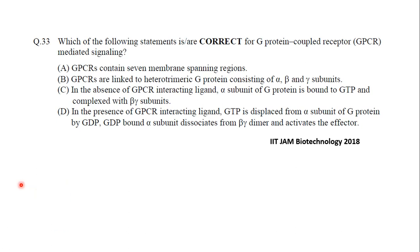GPCRs contain seven transmembrane spanning regions — definitely true. Second, GPCRs are linked with a heterotrimeric G protein consisting of alpha, beta, and gamma subunits — definitely true. In the absence of a GPCR-interacting ligand, the alpha subunit of the G protein is bound to GTP and complexed with the beta-gamma subunit — that is not true. In the presence of a GPCR-interacting ligand, GDP is displaced from the alpha subunit by GTP, and GTP-bound alpha dissociates from the beta-gamma dimer and activates an effector. So the correct answers are A and B.